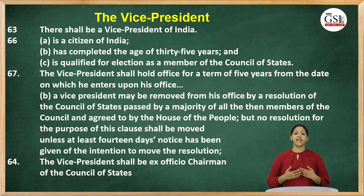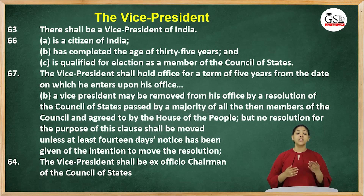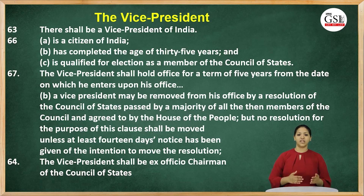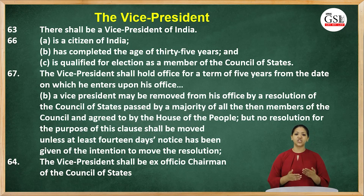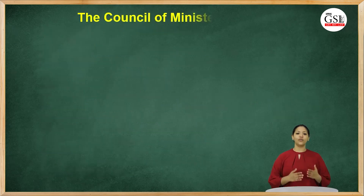The vice president is the ex-officio chairman of the Rajya Sabha, which means that every vice president, by virtue of their position, is also the chairperson of the Rajya Sabha. This is how, despite the fact that the vice president has no other legislative function, he becomes a part of the legislature. The vice president may also discharge the duties of the president in his absence, on resignation, death, or impeachment.